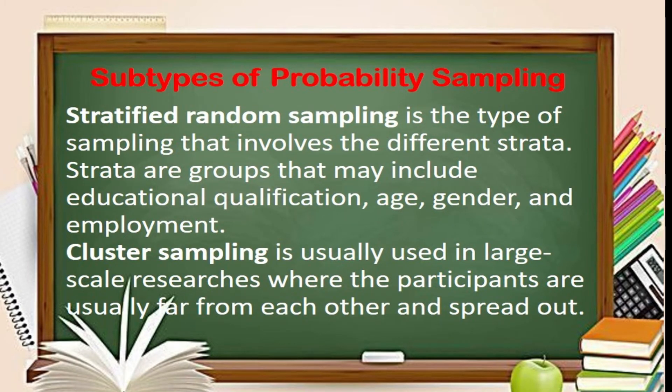Cluster sampling is used in large-scale studies where the population is geographically spread out, and sampling procedures may be difficult and time-consuming. For example, a researcher wants to interview 100 teachers across the country. It will be difficult and expensive to have respondents in 100 different cities and provinces. Cluster sampling is helpful: the researcher randomly selects the regions as the first cluster, then selects the schools as the second cluster, and then the number of teachers.